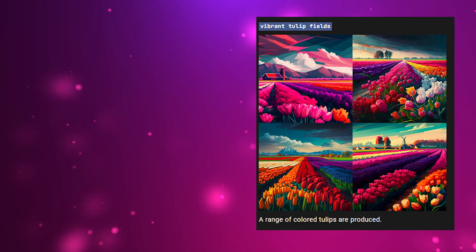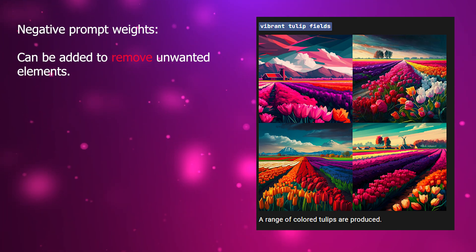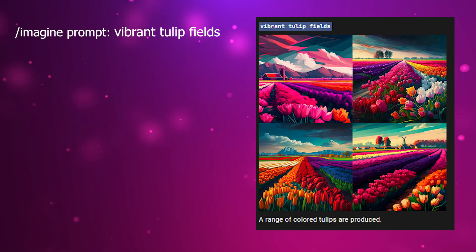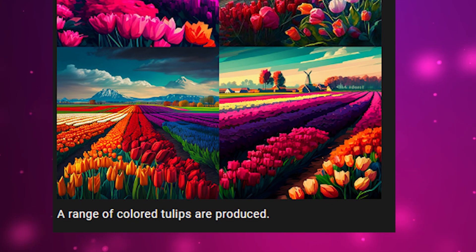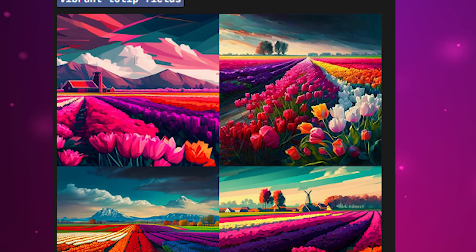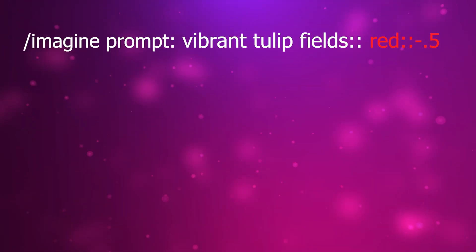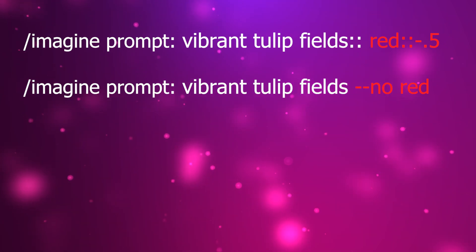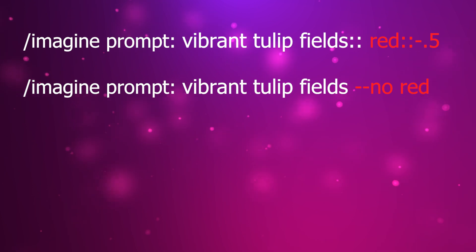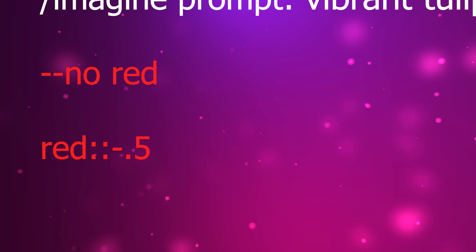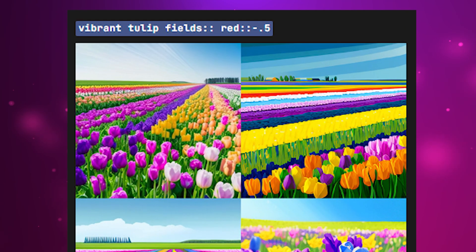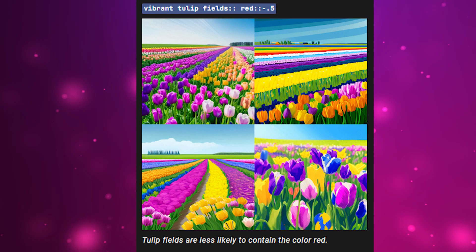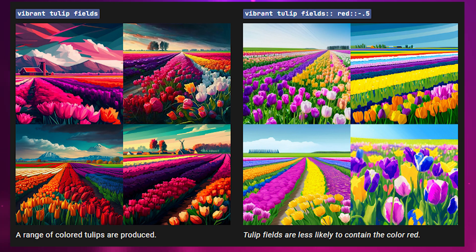Prompt weights can also use negative values to remove unwanted elements. For example, the prompt 'vibrant tulip fields' produces a range of colorful tulips. If I want to remove red flowers, I can write 'vibrant tulip fields:: red::-0.5' — or more simply, use '--no red'. Here are the results with the negative prompt weight: we get similar tulip images but without the red flowers or the color red in the image.